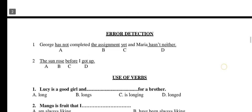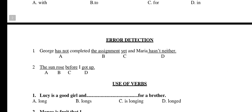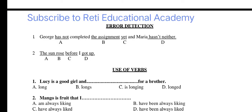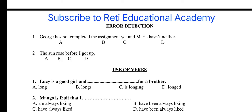Error Detection. Question 1: Judge has not completed the assignment yet, and Maria hasn't neither. The right option is D. Question 2: The sun rose before I got up. The right option is B: rose.